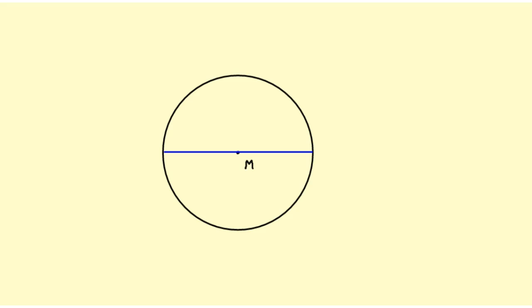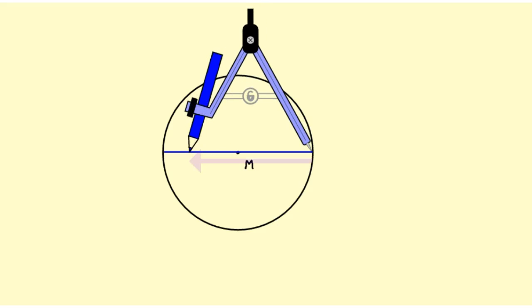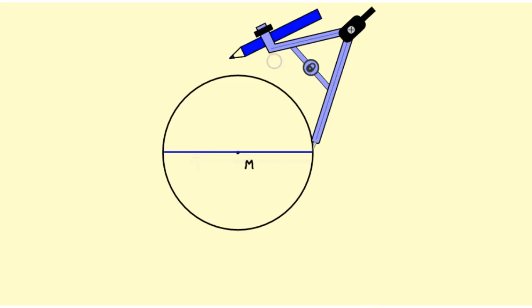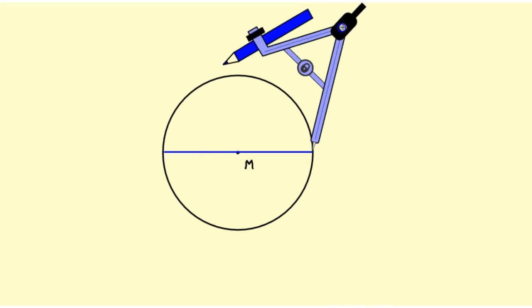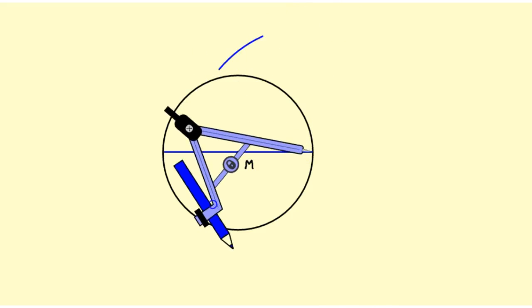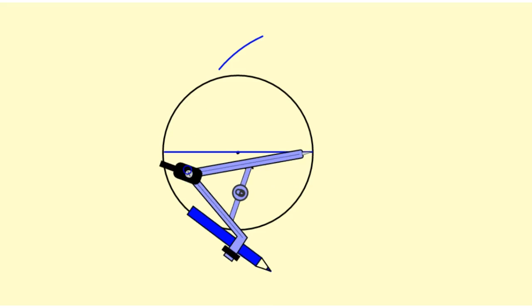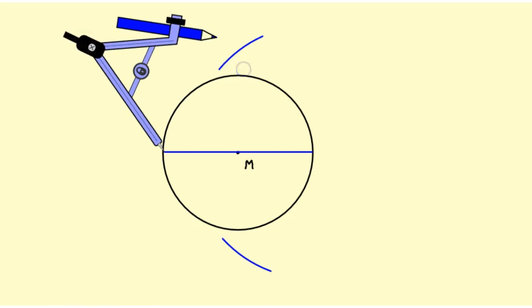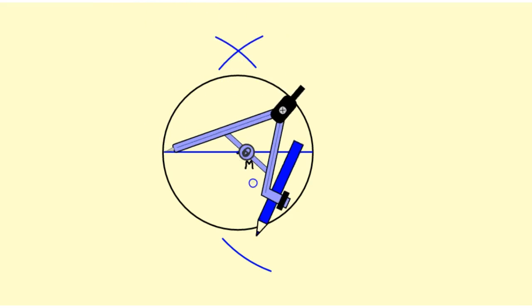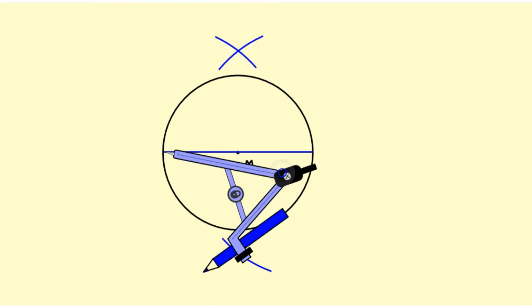Next we're going to draw the perpendicular bisector of that diameter. When we construct a perpendicular bisector, we put the point of the compass on each end of the segment and then we make sure that our compass is opened up more than halfway, and then we draw arcs above and below from each endpoint. Next we take our ruler.